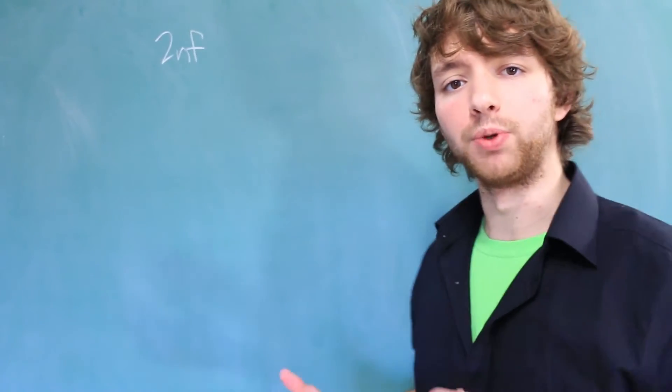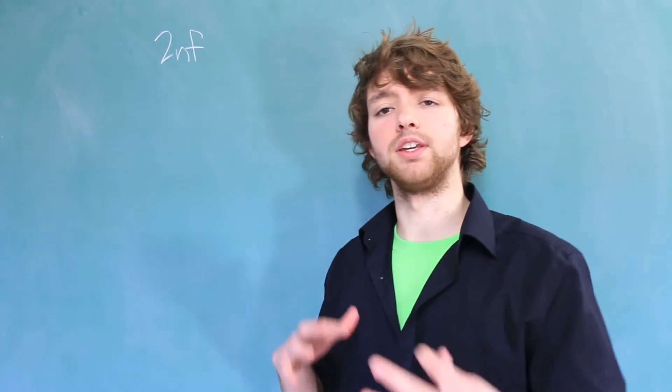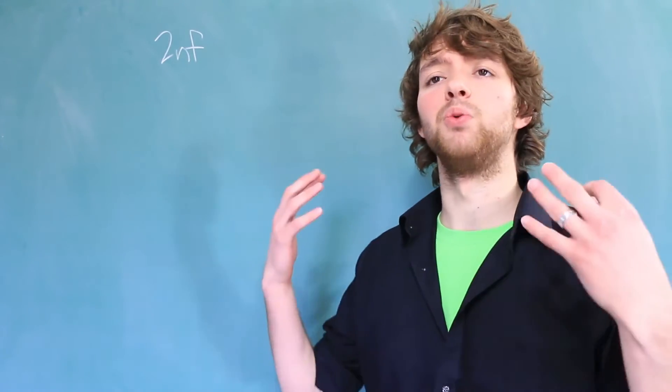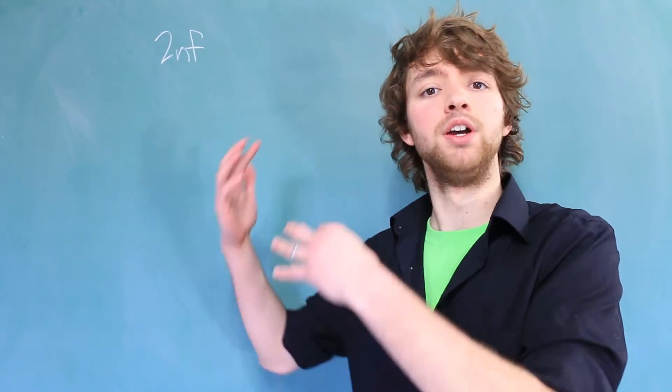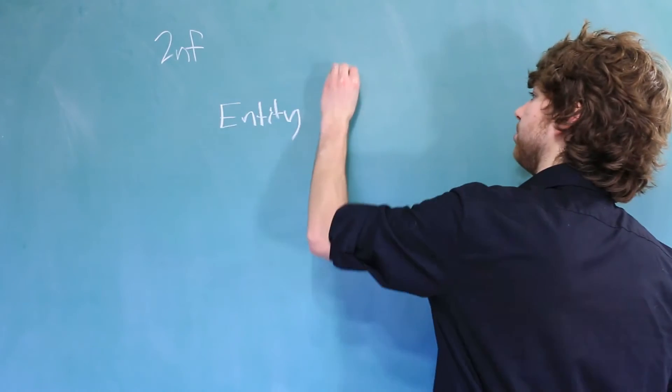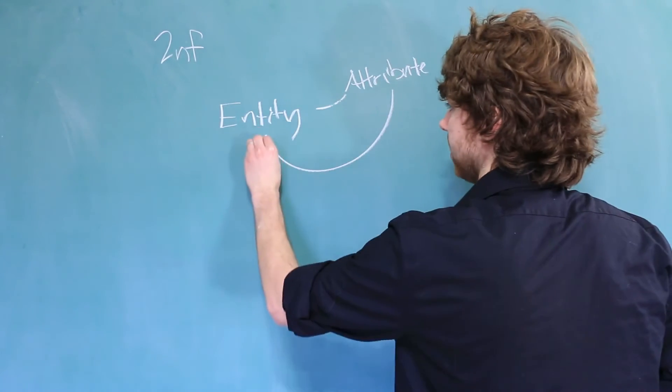Now before we discuss second normal form, we need to remind ourselves of what a dependency is. Essentially a dependency is when something depends on something else. And in databases, that would be like an attribute describing an entity. So if we have an entity, we have attributes that describe this entity. This is a dependency. The attribute depends on the entity.